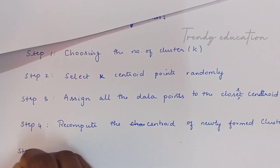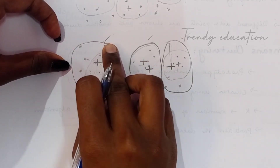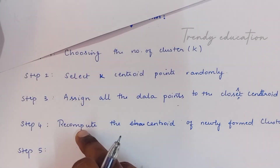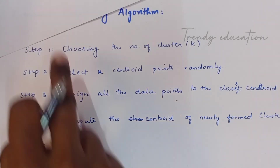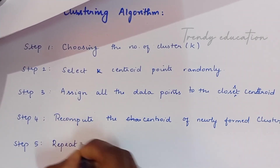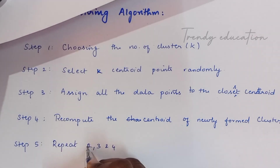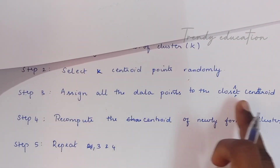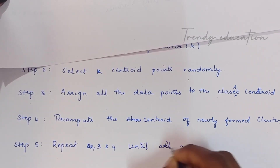Step 5: Repeat steps 3 and 4 again and again iteratively until all data points are clustered. This is why k-means is called an iterative algorithm — we keep reassigning data points and recomputing centroids until no points remain unclustered.